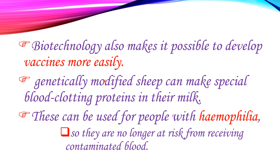Genetically modified sheep can make special blood clotting proteins in their milk. This can be used for people with hemophilia, so they are no longer at risk from suffering from contaminated blood.